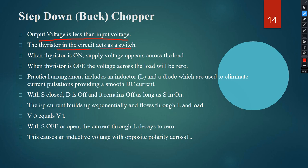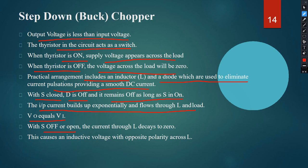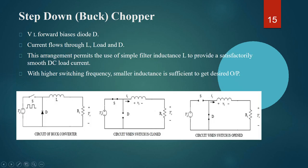The thyristor in the circuit acts as a switch. When on, the supply voltage appears across the load. When off, the voltage across the load is zero. The practical arrangement includes an inductor L and a diode to eliminate current pulsations, providing a smooth DC circuit. With switch S closed, diode D is off. The input current builds up exponentially through L and the load. When S is open, the energy stored in L decays, causing an inductive voltage with opposite polarity across L.